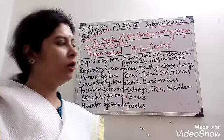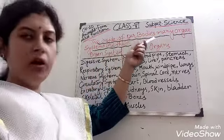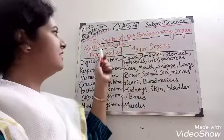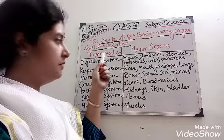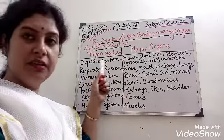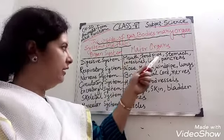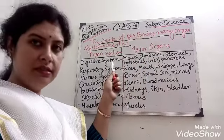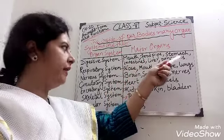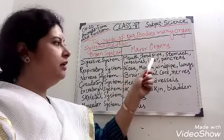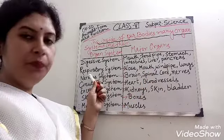Our first topic is the inside of our bodies — many organ systems are present. The organ systems are: first, the digestive system, whose major organs are mouth, food pipe, stomach, intestine, liver, and pancreas. In the respiratory system, the major organs are nose, mouth, windpipe, and lungs.